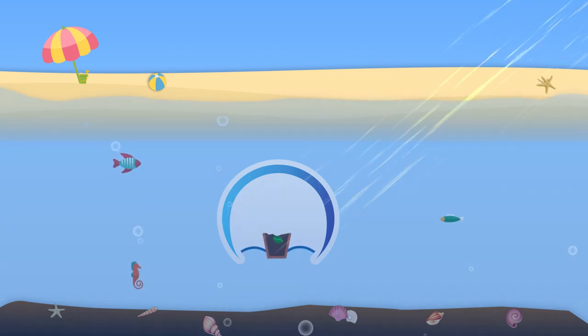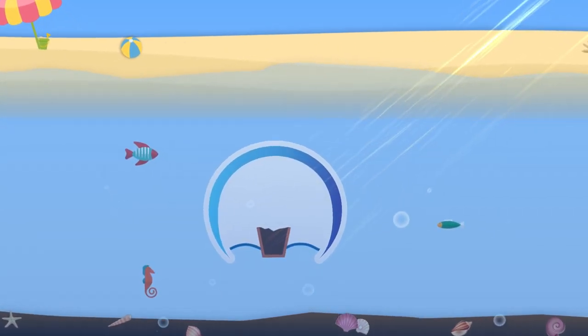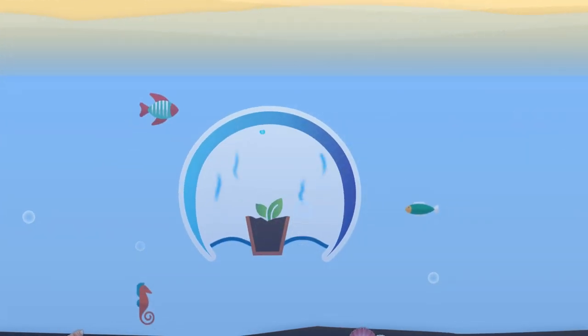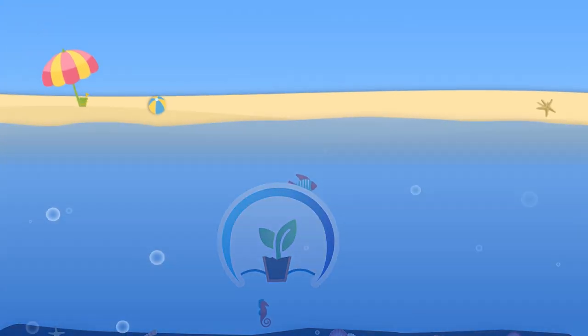Light from the sun penetrates the surface and gets to the plant inside the biosphere. At the same time, the water of the surface, inside the sphere, evaporates. This way, fresh water is automatically provided to our growing plant.